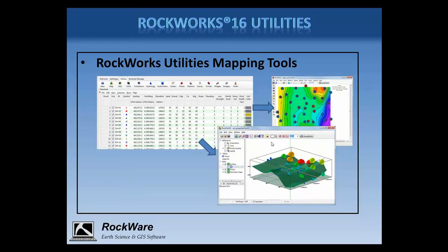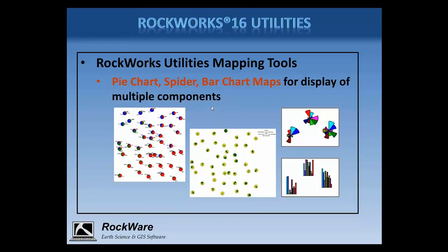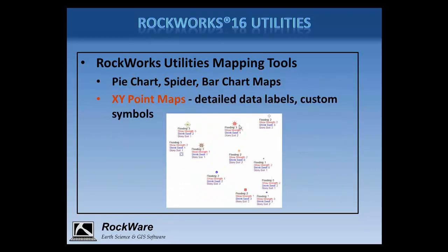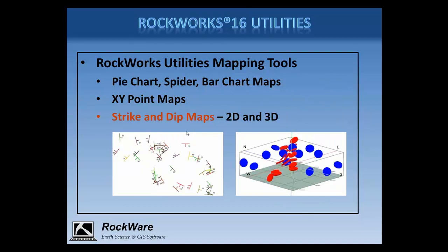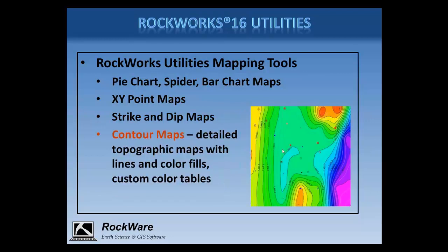The map menu in the utilities offers visualization of multiple measurements at sites using pie chart maps, spider maps, bar chart maps, and starburst maps. You can create point maps with unique symbols and very detailed labels. If you have XY points with dip direction, dip angle, or strike dip measurements, you can create 2D maps with symbols and 3D displays with disks showing the orientations. Rockworks includes programs for creating contour maps representing elevations or any spatially referenced measurement values. There are simple triangle-based contour maps as well as grid-based maps. A number of gridding methods are available and you can include line contours and color contours with many color schemes, and you can define your own custom color tables.